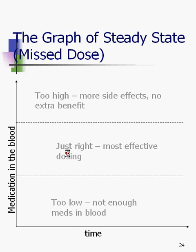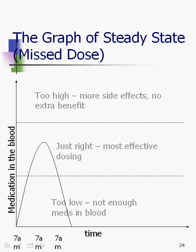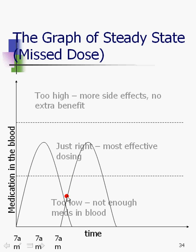So what happens when someone misses a dose? We have the 7am bell curve, and then let's say somebody sleeps through their alarm — 7am comes and goes and they don't take it. Then the next 7am they remember. You can see that we have a window open in the too-low zone, where there's not enough medication in the bloodstream. That happening once in a while is not a cause for alarm, actually. We're able to keep HIV at bay as soon as the next dose is taken. If this happens every other day, obviously that's going to be a problem.